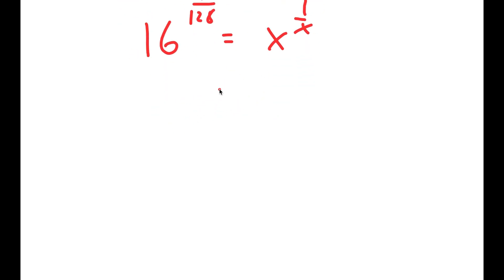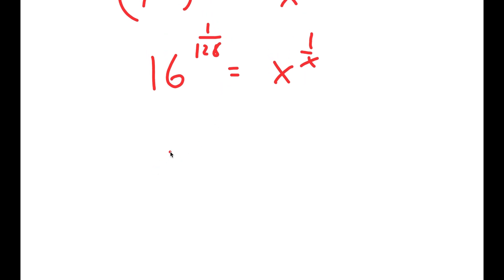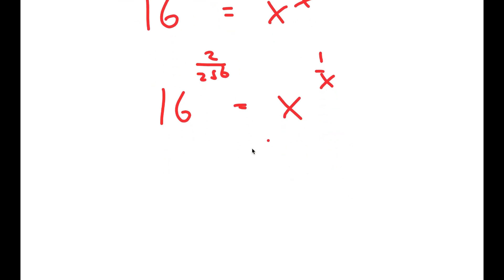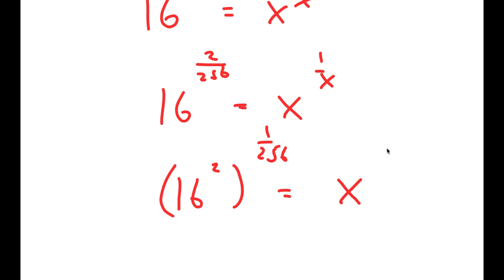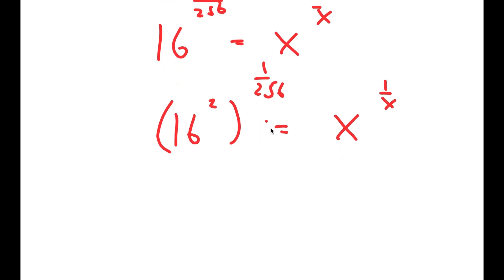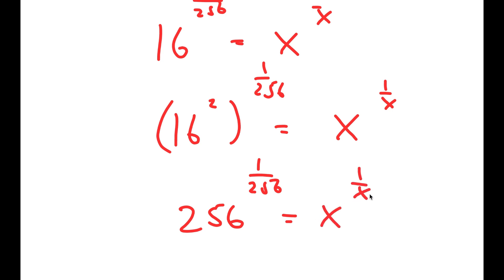So I'm going to repeat it once again. I get 16 to the power of 2 over 256 is equal to x to the power of 1 over x. This is the same thing as 16 squared to the power of 1 over 256 is equal to x to the power of 1 over x. And 16 squared is equal to 256, so I get 256 to the power of 1 over 256 is equal to x to the power of 1 over x.